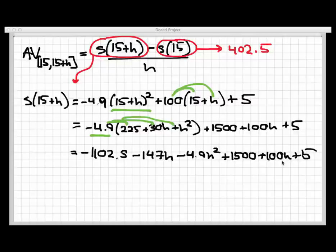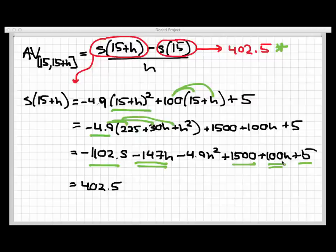All the expanding has been done; now let me find the like terms. The constant terms — negative 1102.5, 1500, and 5 — all add up to 402.5, which is what s of 15 was. The linear terms with a single factor of h add up to negative 47h, and then finally there is one quadratic term: negative 4.9h squared. So on the next slide, we're going to pull this result back into the average velocity formula and simplify the fraction.